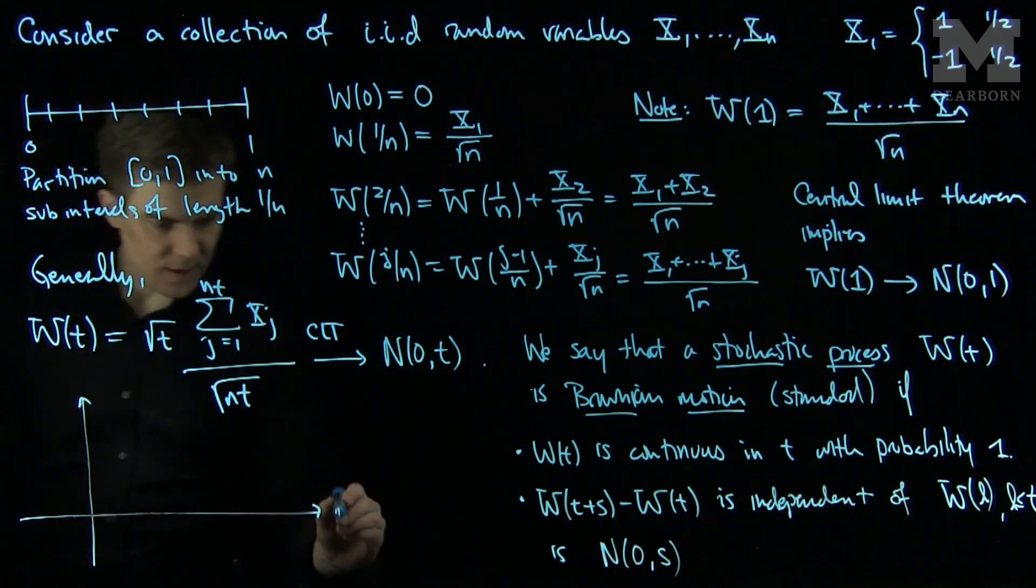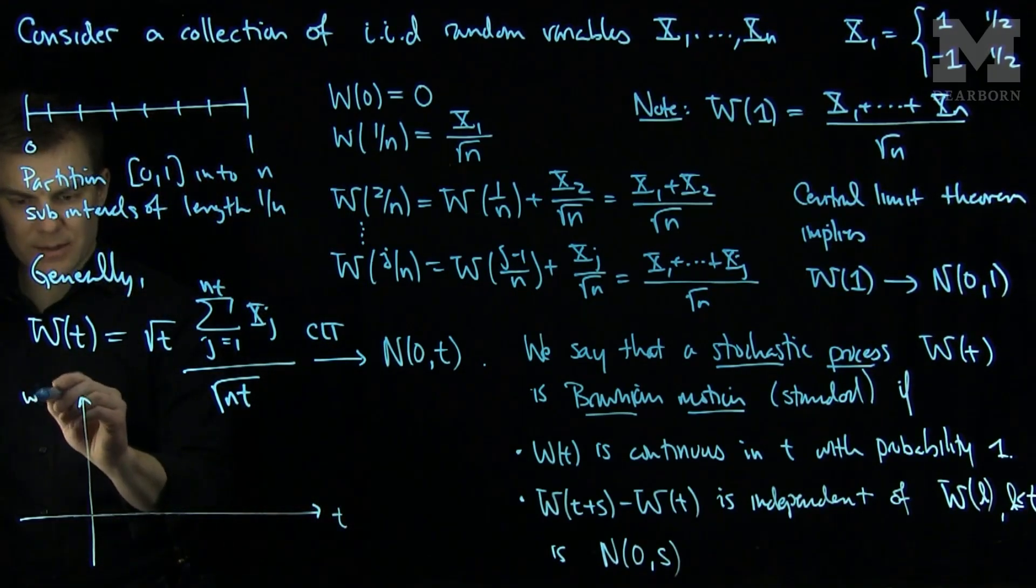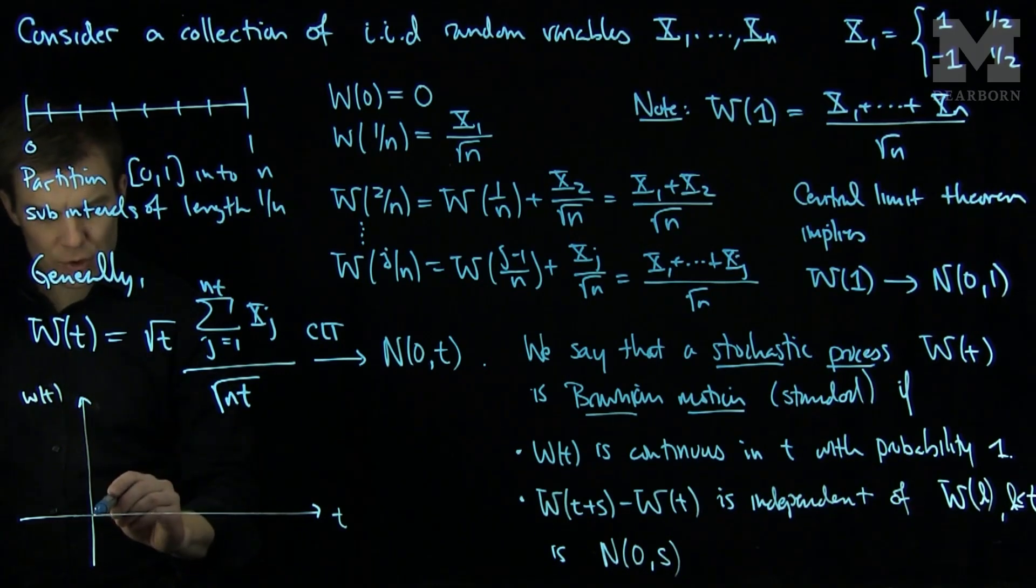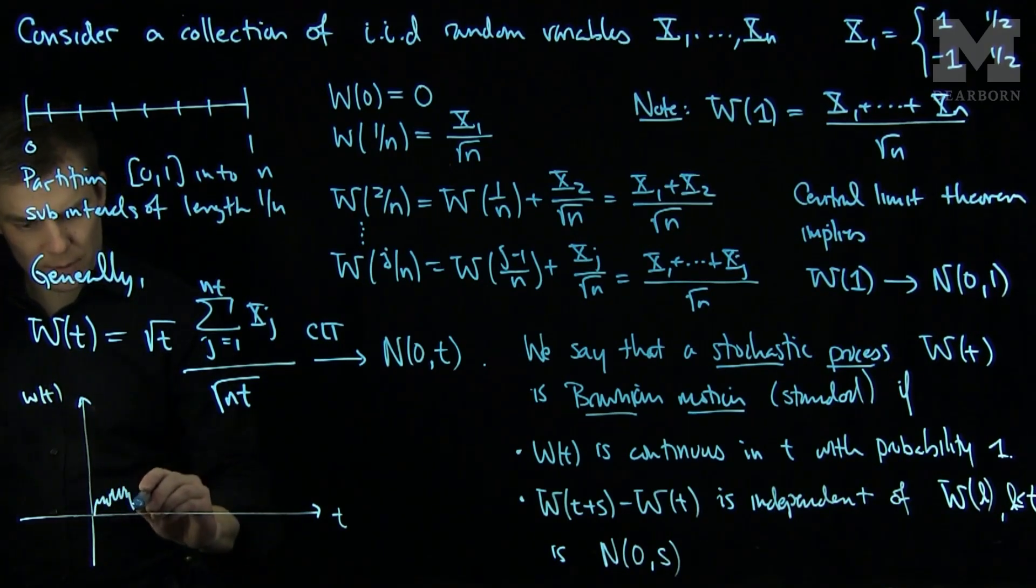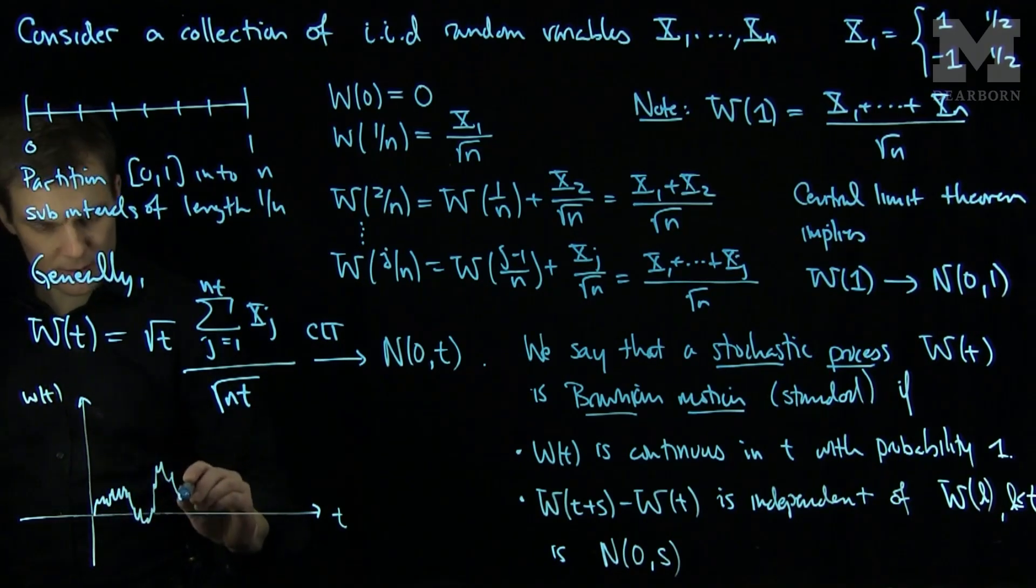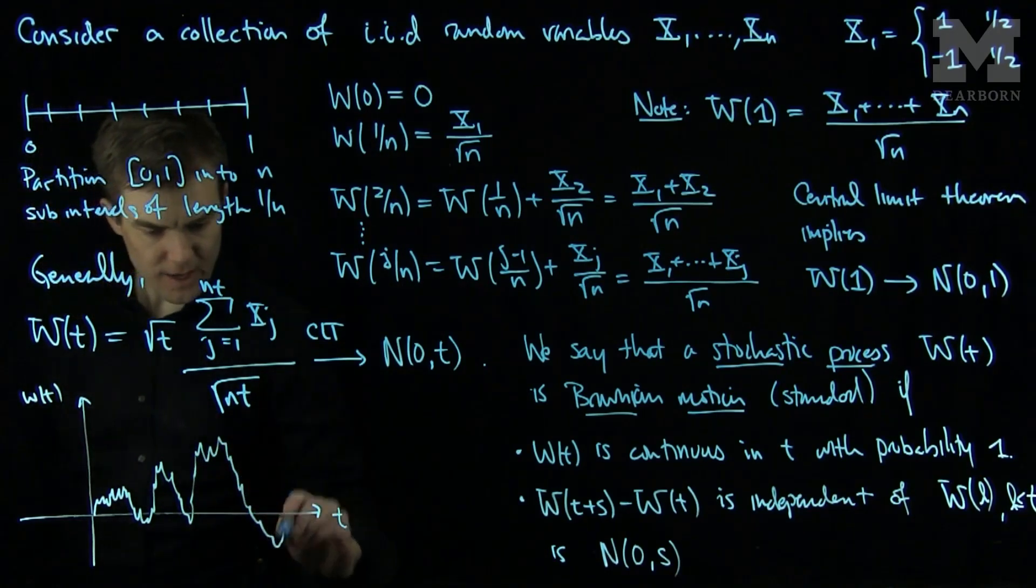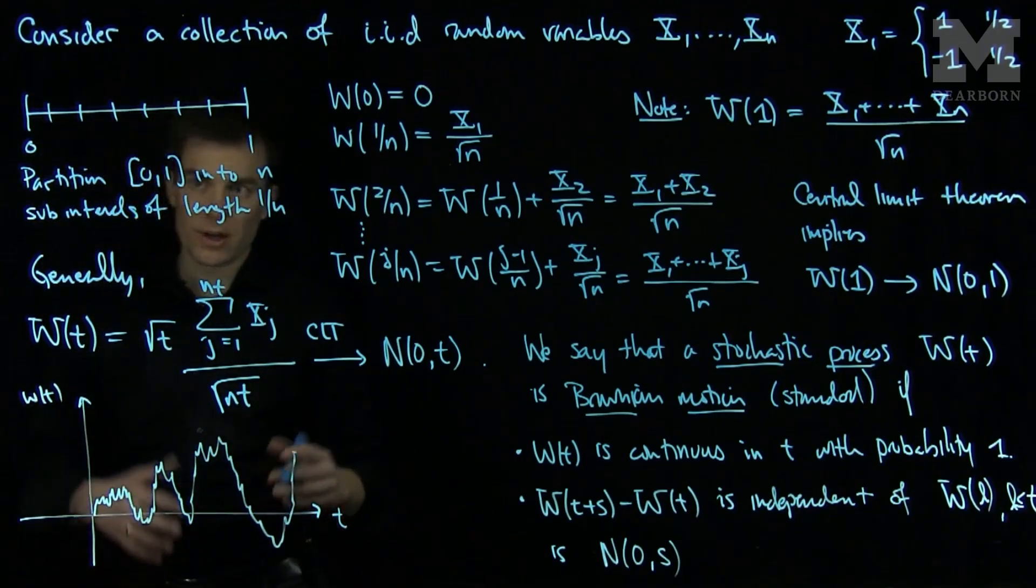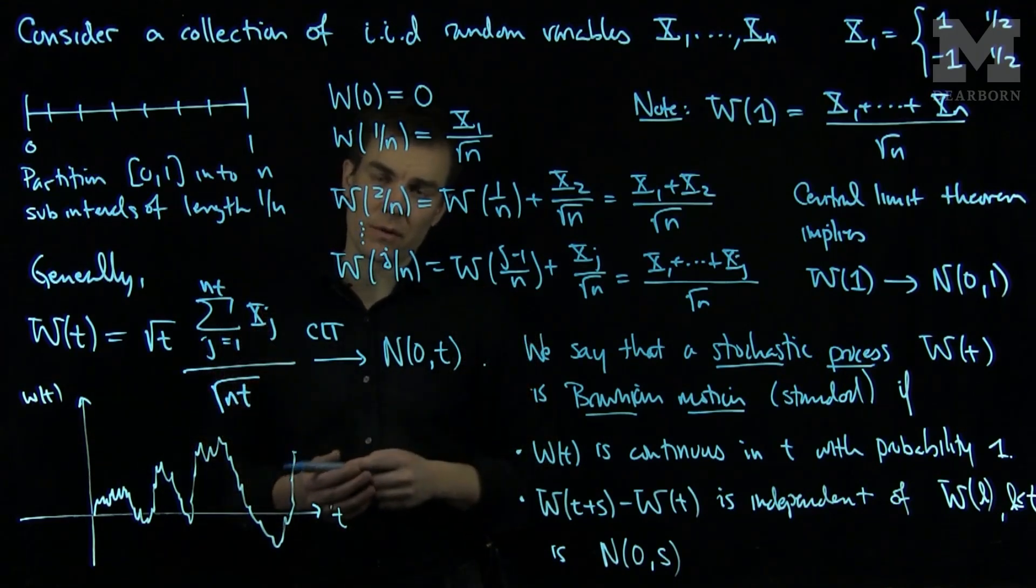And so we can see that what's happening with Brownian motion, if we have our time axis and our wt axis, is that it should look like a scaled version of a random walk. So if I zoom in on any version of Brownian motion, I should see an infinitesimal version of a random walk.